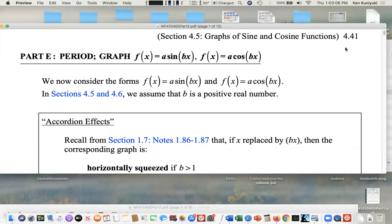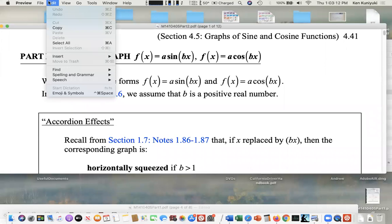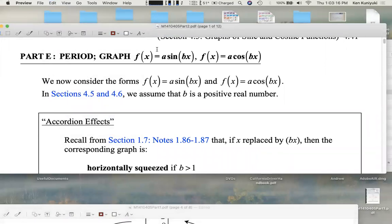Hi, everyone. We're continuing with graphing sine and cosine functions. Before, we talked about the impact of putting a number in front of sine or cosine. That led to vertical stretching or shrinking, maybe a flip. Now we're going to talk about what happens if we put a number in front of x.